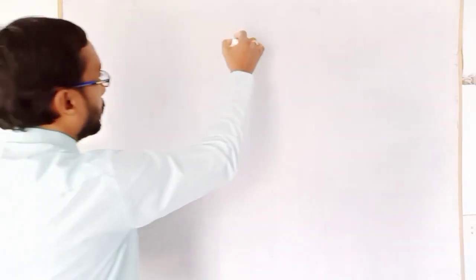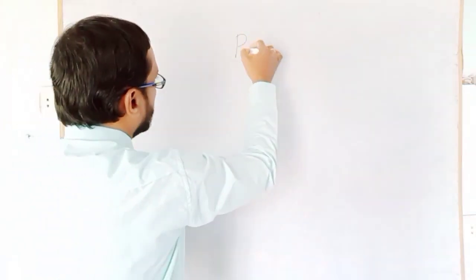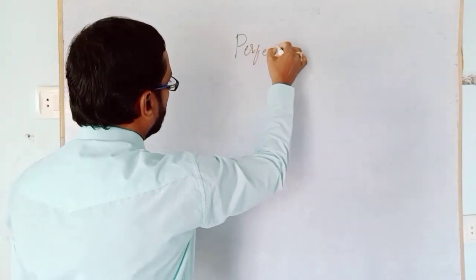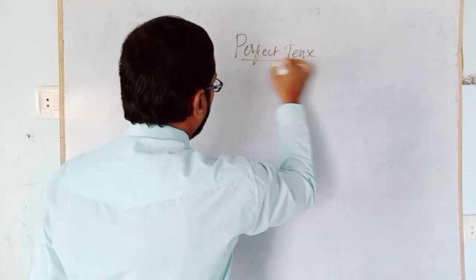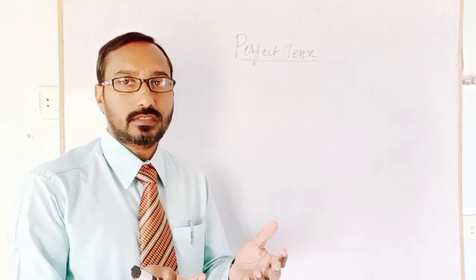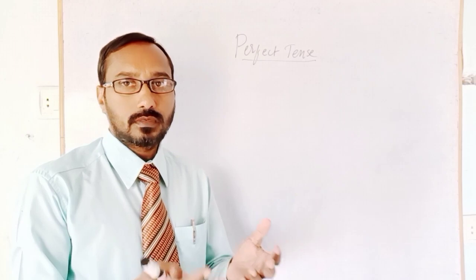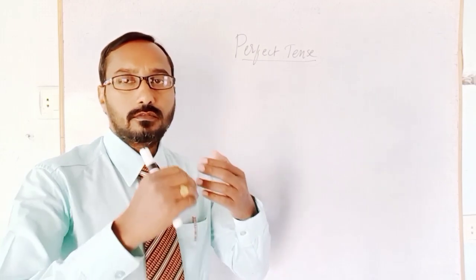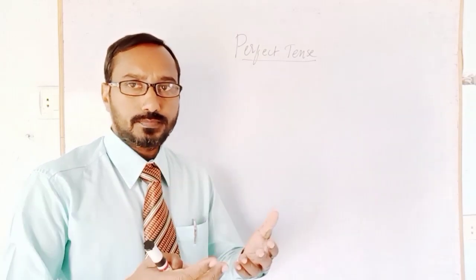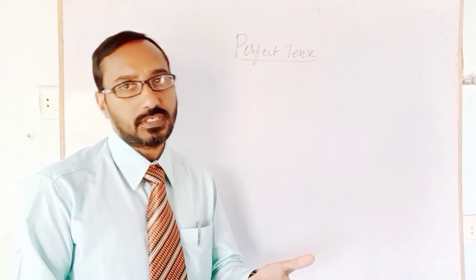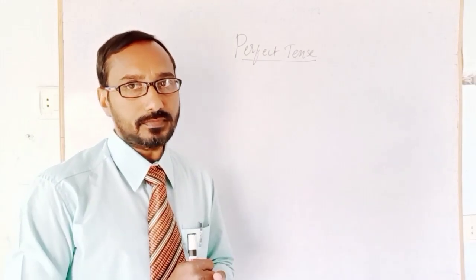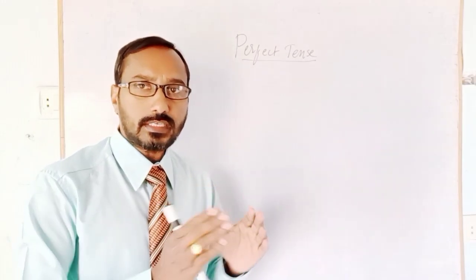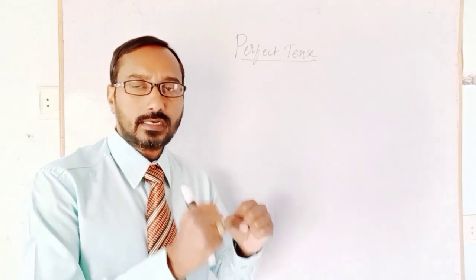The remaining part, part 3, we are now going to discuss, which means perfect tense. We have present perfect, past perfect, and future perfect. Let us discuss about perfect tense. Perfect tense means whichever is completed or finished exactly.